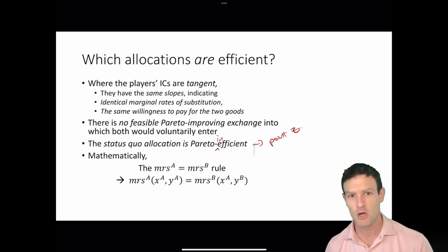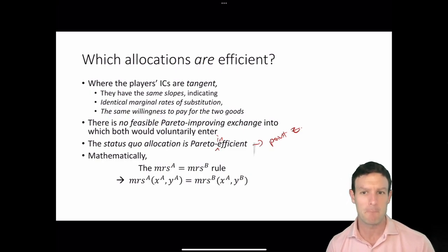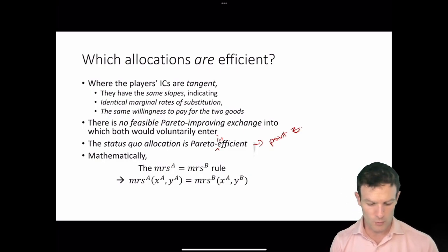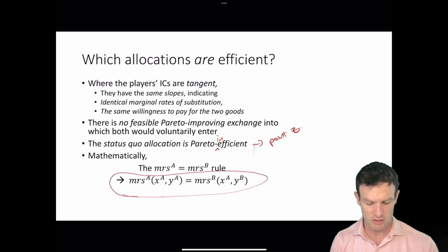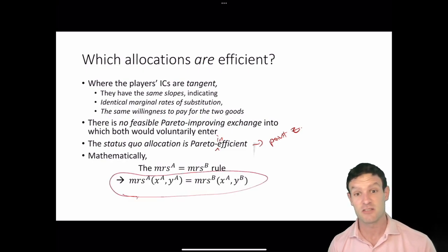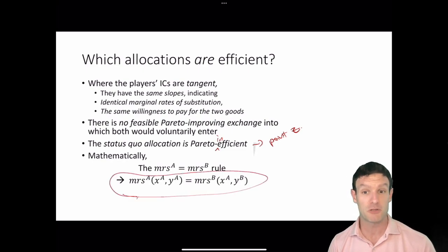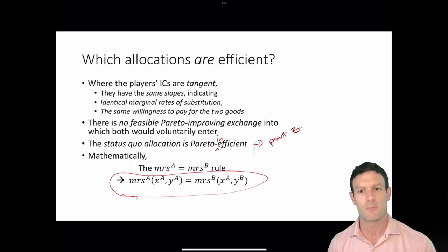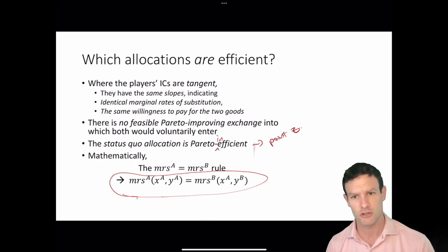When Ianda's willingness to pay equals Biko's willingness to pay, we have a Pareto efficient allocation. We are going to use this exact condition in a later video to show a way to compute the equation for the Pareto efficient curve.